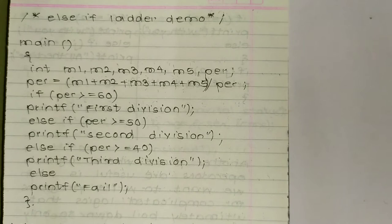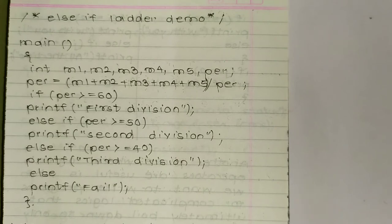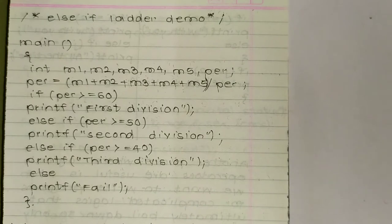The variable per is calculated as the sum of m1 through m5 divided by 5. If per is greater than or equal to 60, print 'First Division.' Else if per is greater than or equal to 50, print 'Second Division.' Else if per is greater than or equal to 40, print 'Third Division.' Else print 'Fail.'